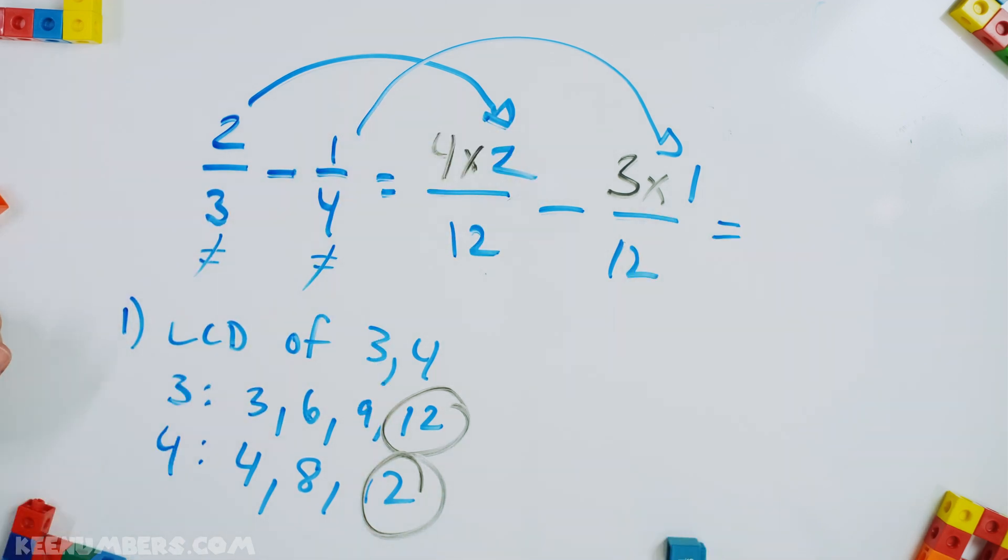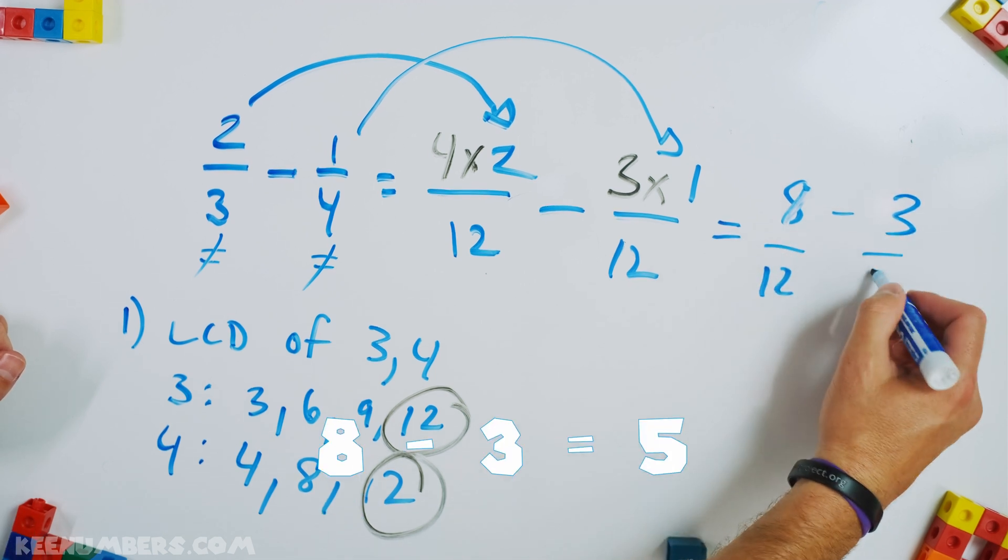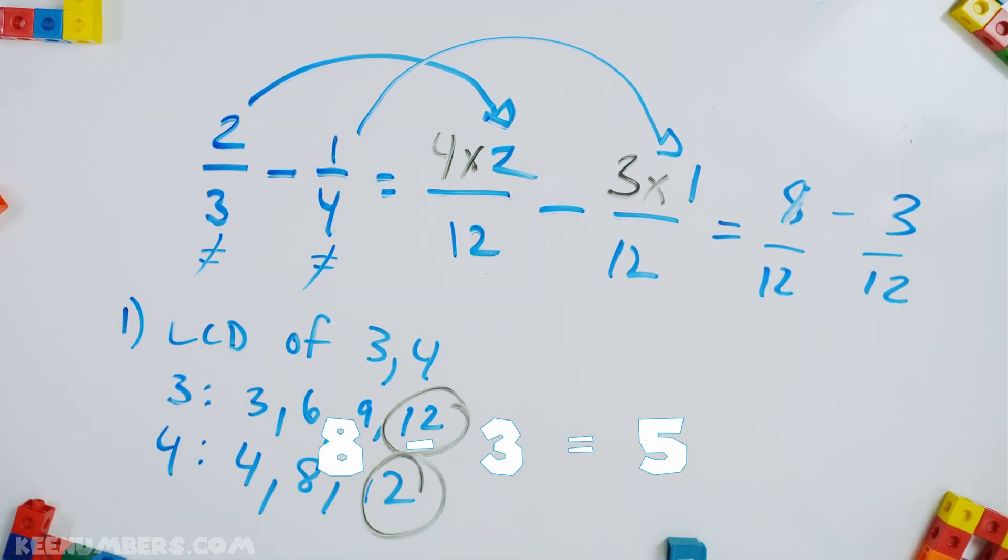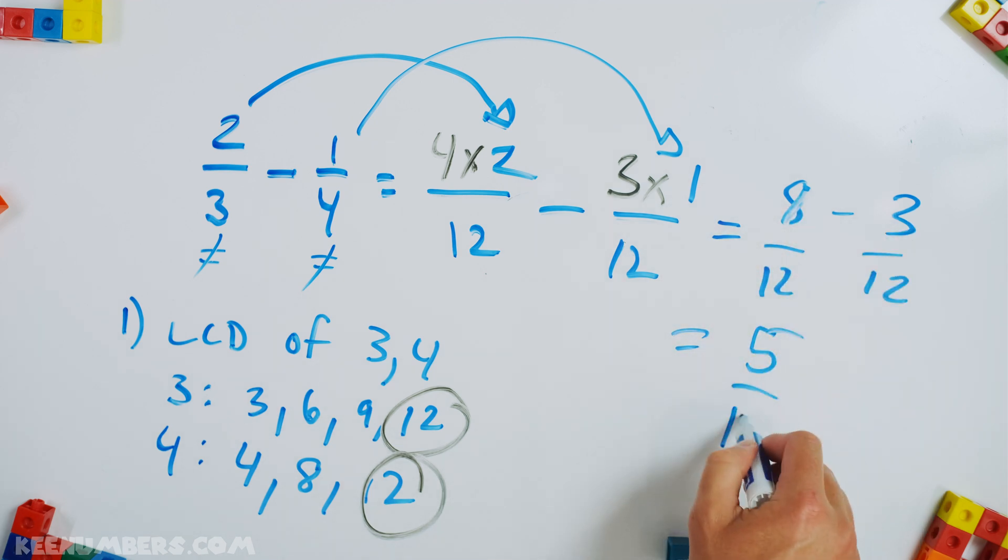So this is simply eight minus three. And these are 12ths. Two thirds equals eight 12ths. So this is going to be eight minus three or five 12ths.